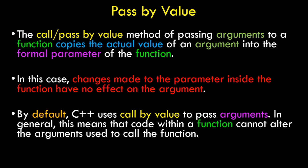Starting off with pass by value: the call or pass by value method copies the actual value of an argument into the formal parameters of the function. Changes made to the parameter inside the function have no effect on the arguments. By default, C++ uses call by value, meaning code within a function cannot alter the arguments used to call it.